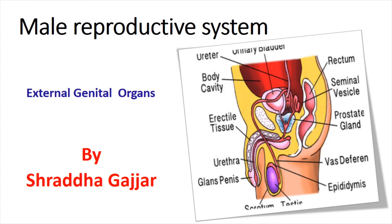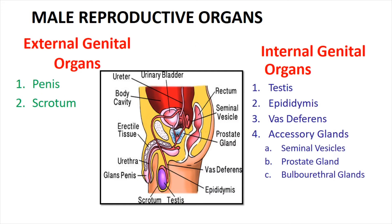Hello guys, today I am going to teach you about the male reproductive system. In the male reproductive organ, there are two parts. First one is the external genital organ and second one is the internal genital organ.